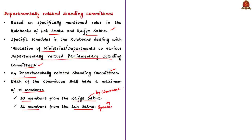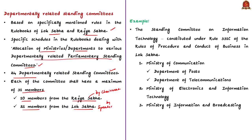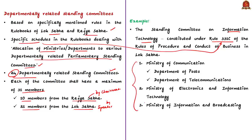As an example, the standing committee on information technology is one of the 24 departmentally related committees, constituted under rule number 331C of the Rules of Procedure and Conduct of Business in Lok Sabha. The ministries and departments under its jurisdiction include: Ministry of Communications, Department of Posts, Department of Telecommunications, Ministry of Electronics and Information Technology, and Ministry of Information and Broadcasting. Similarly we have other standing committees mentioned in the schedule of rules of procedure in either Lok Sabha or Rajya Sabha.